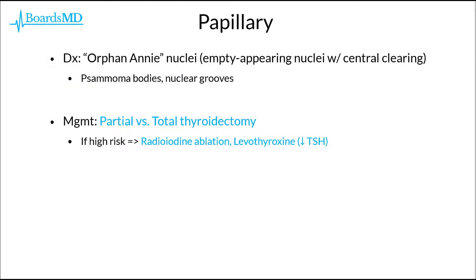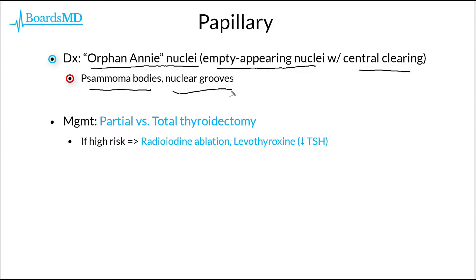In order to diagnose papillary carcinoma of the thyroid, we are going to need a tissue sample, which is going to reveal orphan Annie nuclei. These orphan Annie nuclei classically will have empty-appearing nuclei with a central clearing. Additional histopathologic features include psammoma bodies and nuclear grooves.